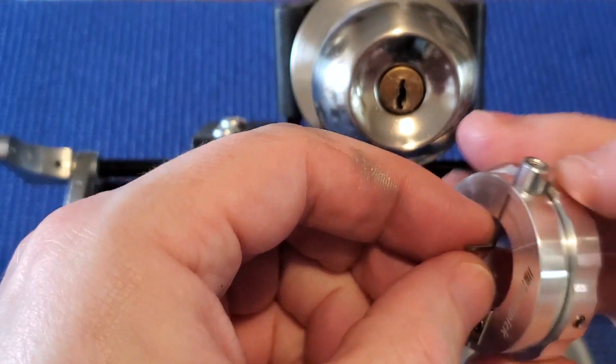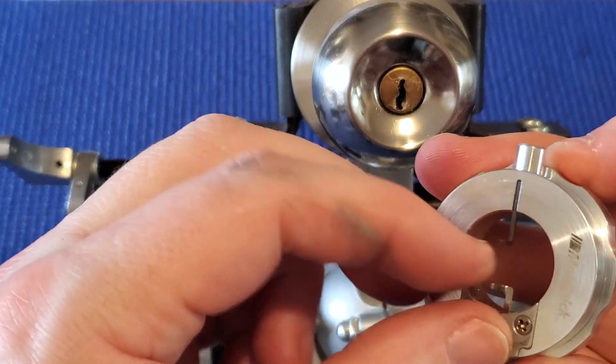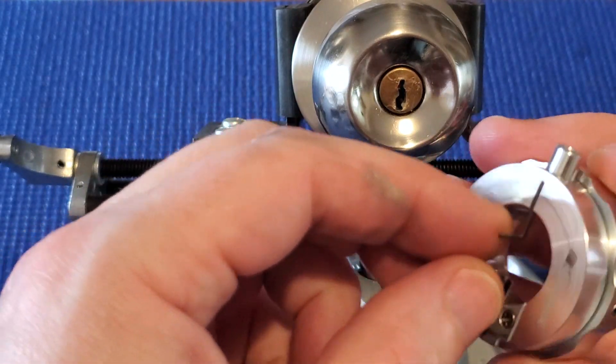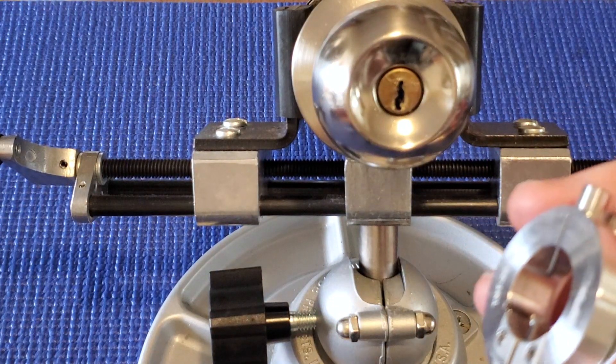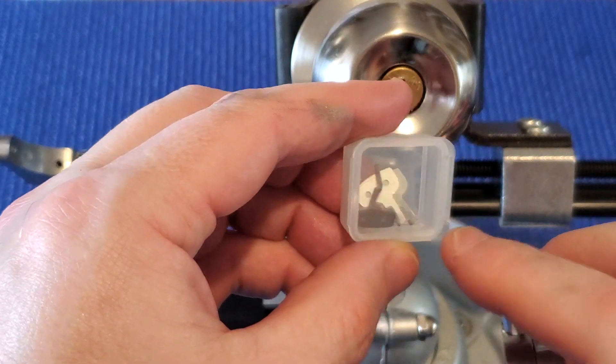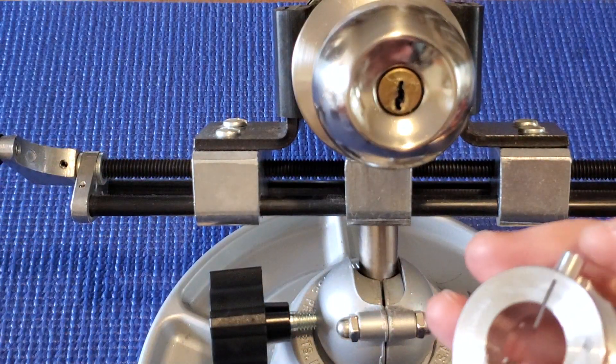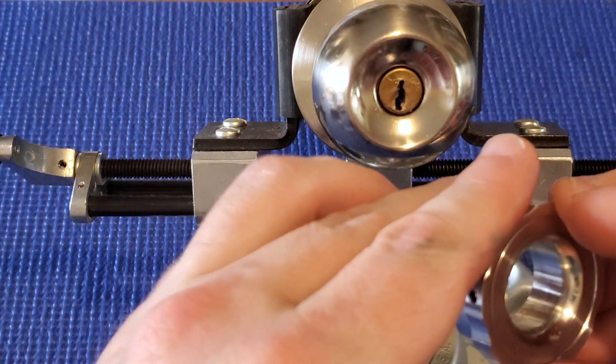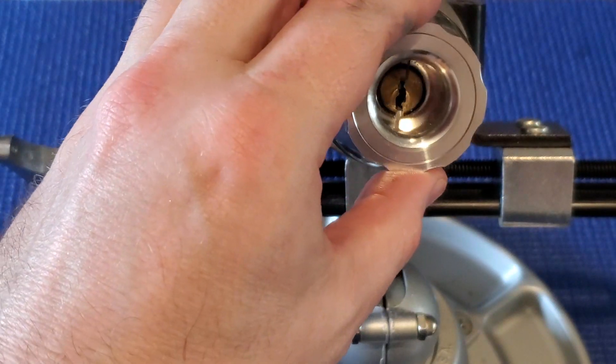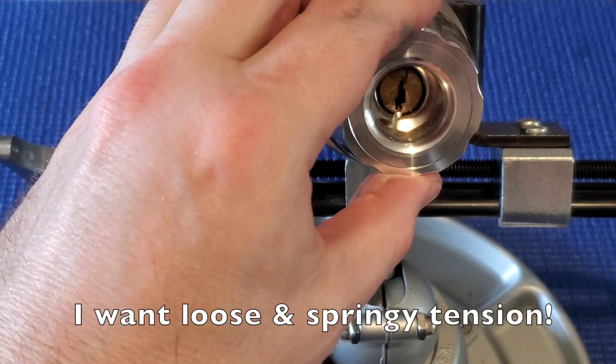That's because you don't want to tension this too tight because this is just thin metal and you might bend them or break them. They do send some spares in case you do, but the idea is that, especially with the Kronos, you just want loose tension.